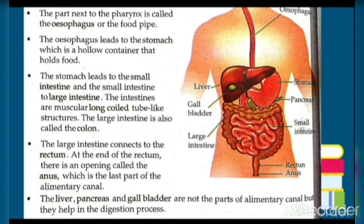The part next to the pharynx is called the esophagus or the food pipe. The esophagus leads to the stomach, which is a hollow container that holds food.